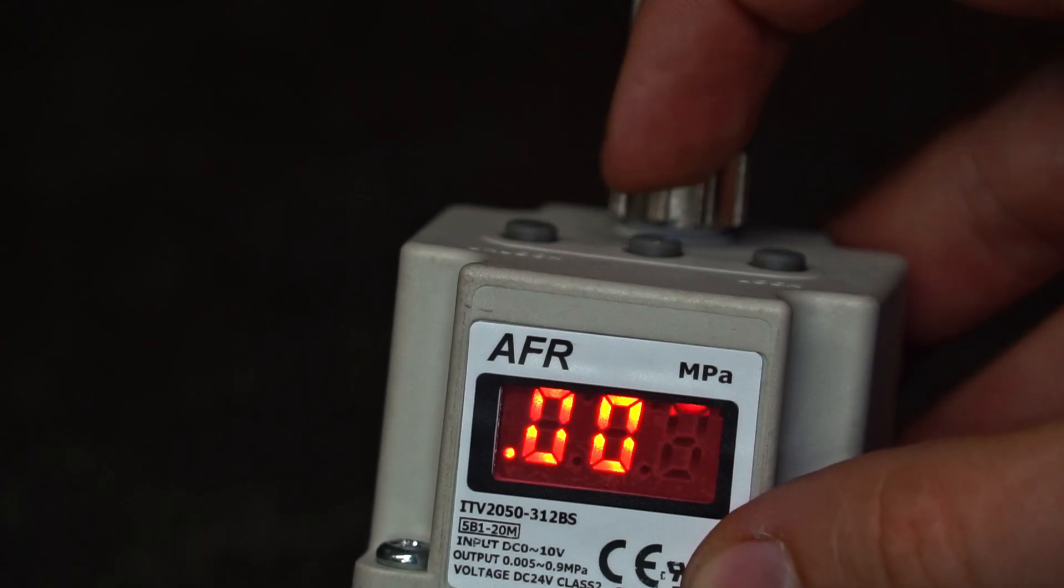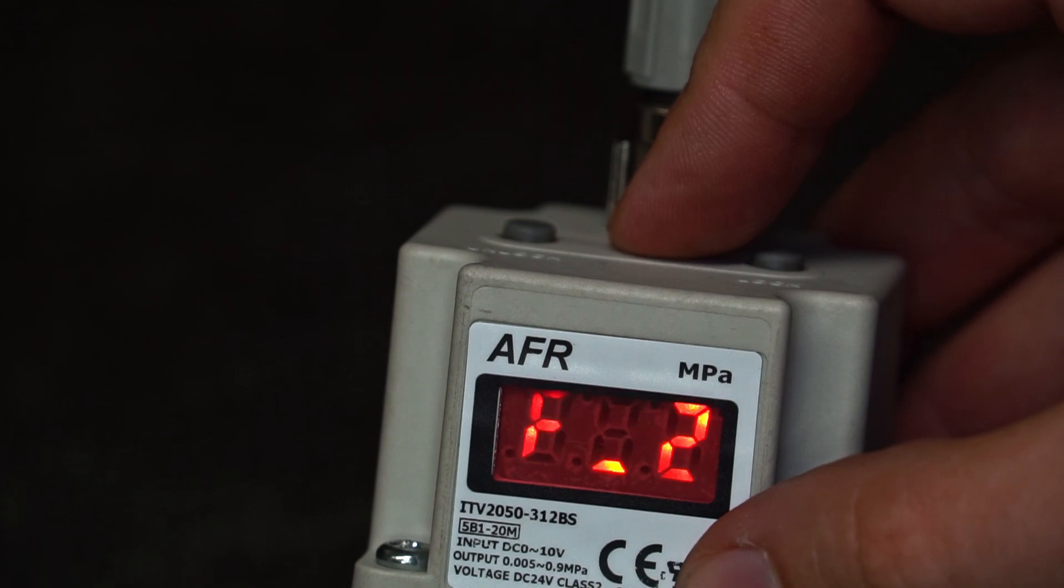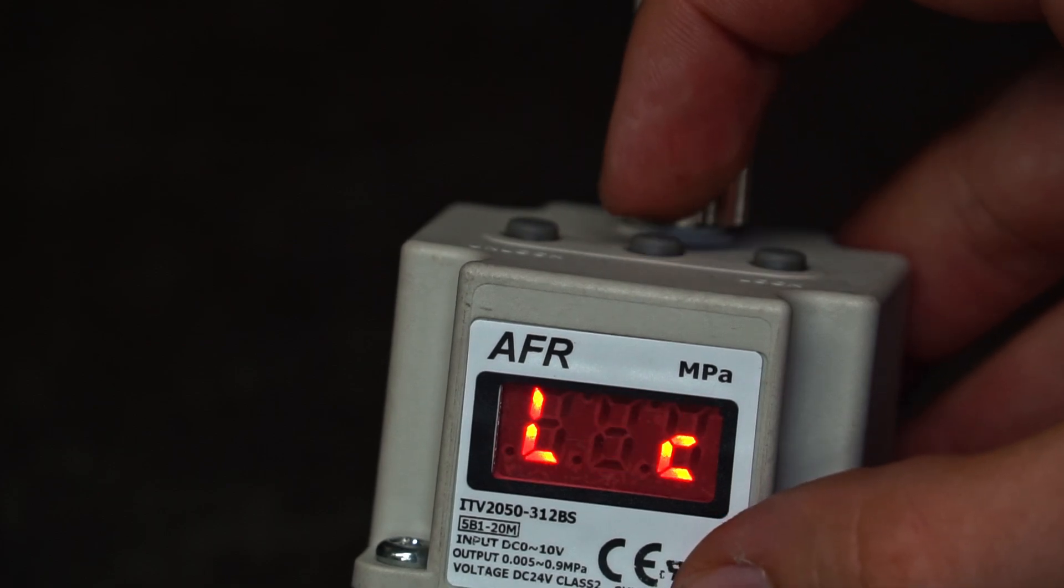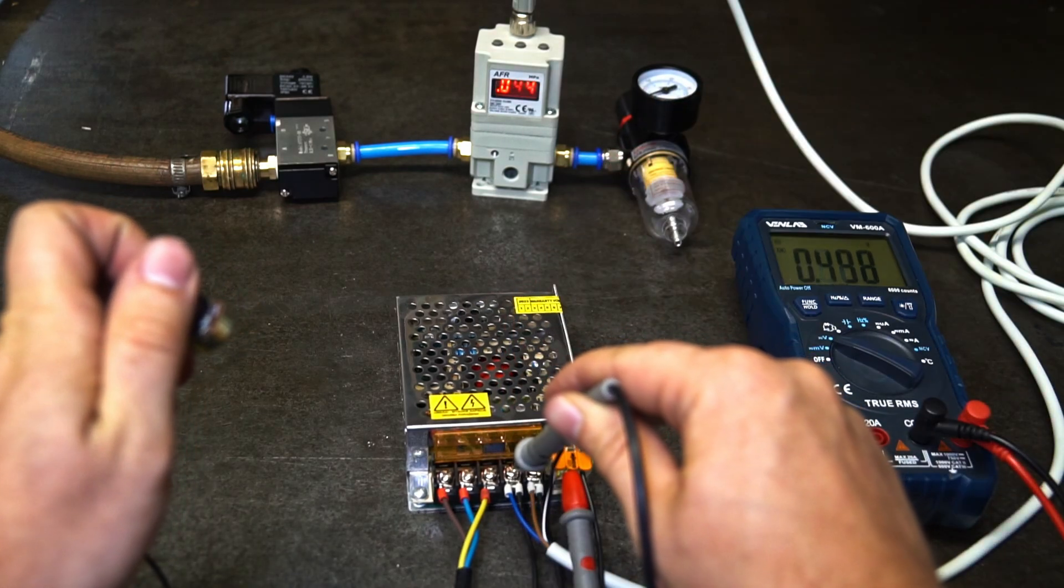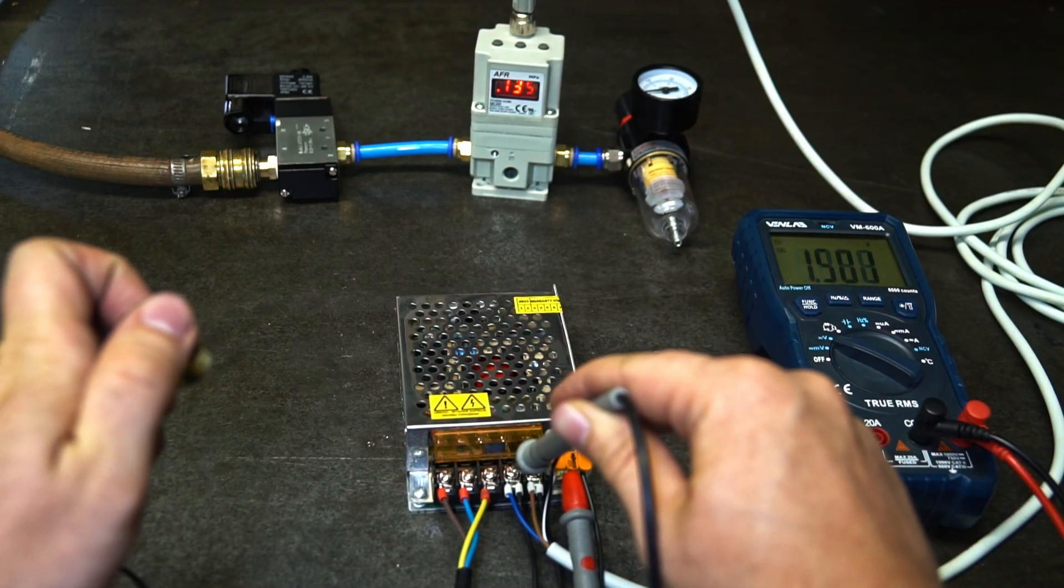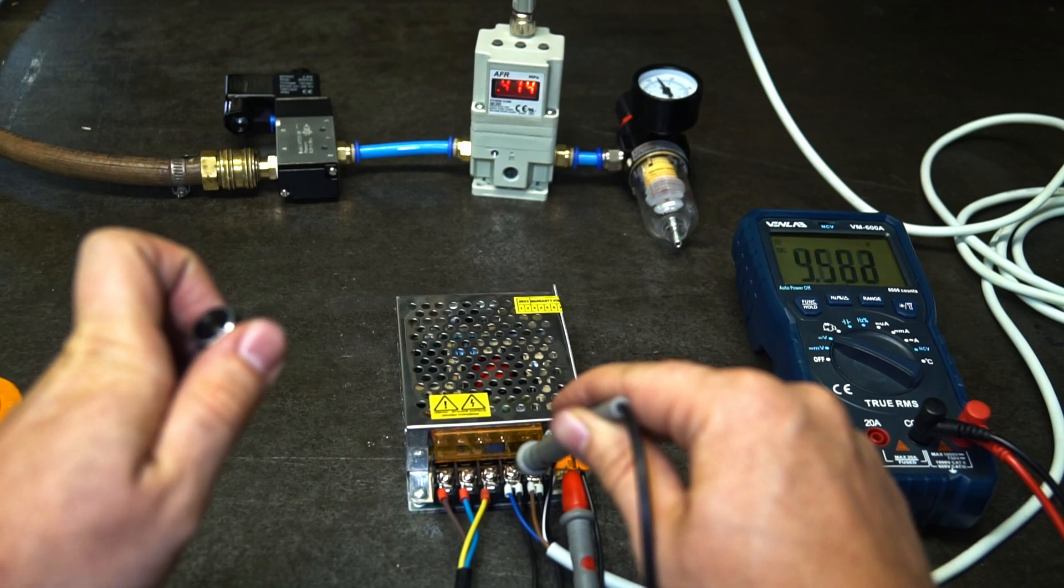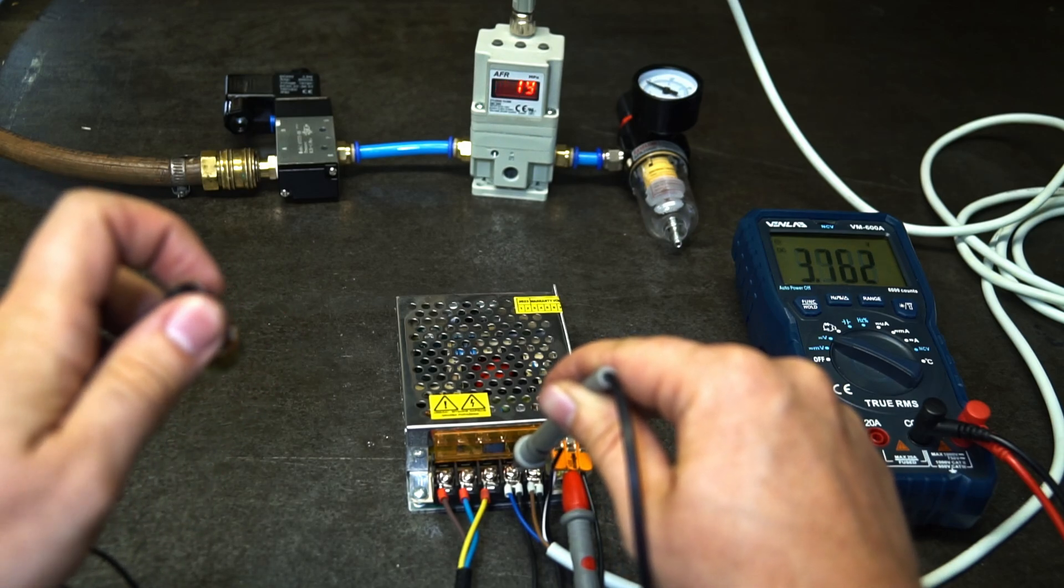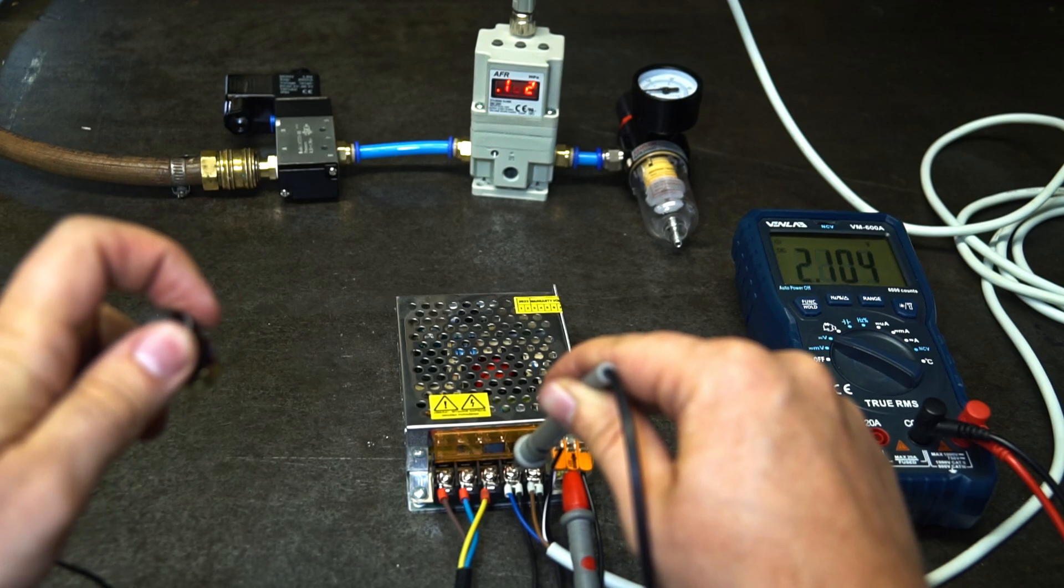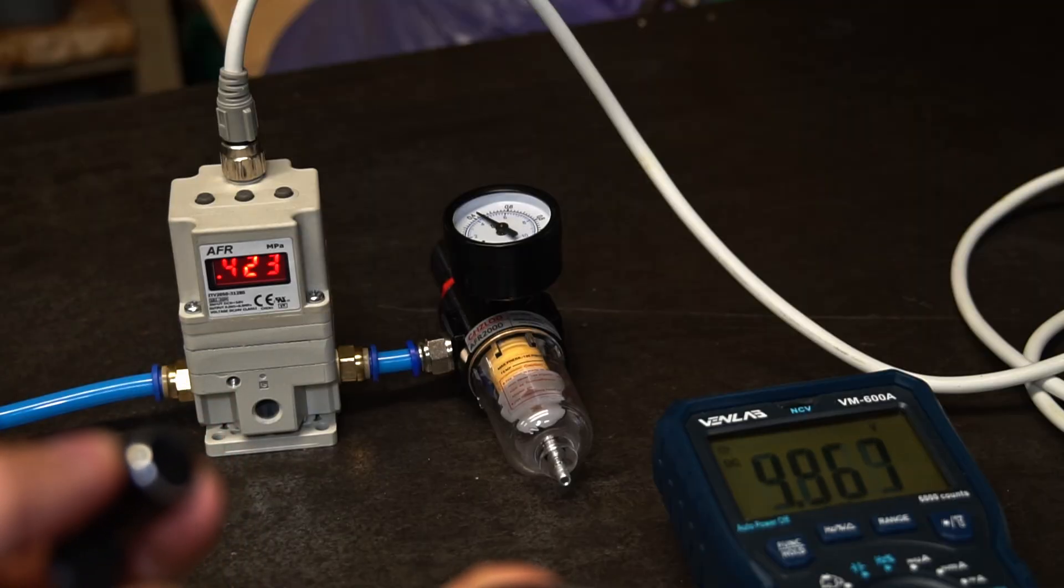I added a voltmeter to check what happens on the input signal. And here we go. The output pressure is proportional to the input voltage, but the range is a bit lowish.